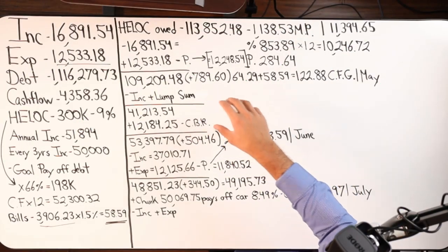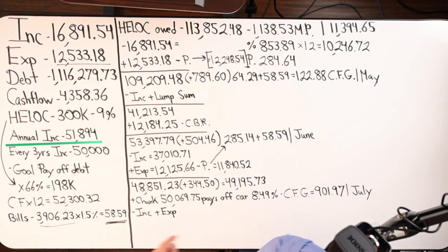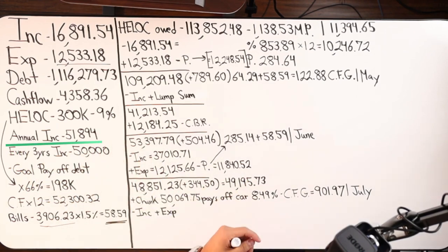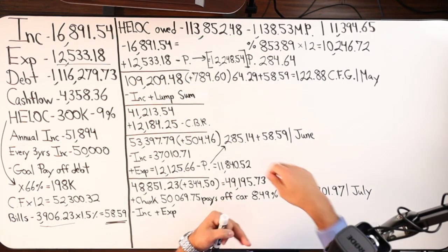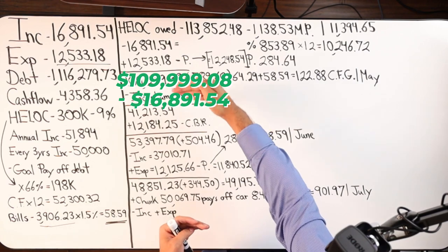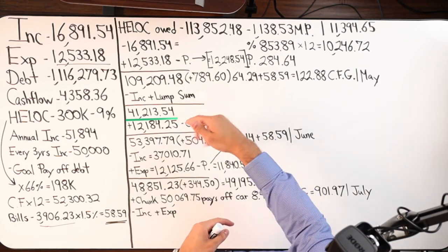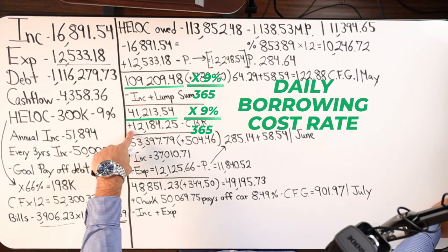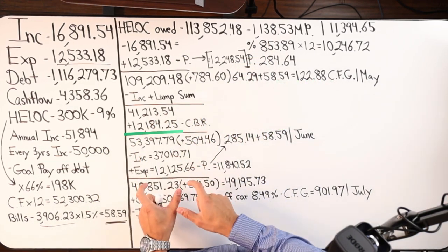So I did $109,209.48, and then add this number. Once you add that number up, then minus income, then minus lump sum, you should get this number, $41,213.54. Again, take that number times it by 9%. Take this number times it by 9%, divide by 365, you can get your daily costs. Now here's how I wrote the expense number to accommodate. So I see how I'm slowly adding the elements here, slowly adding it. So I'm saying $12,184.25 minus cashback rewards. So what I did was I minused $284.64 from this number. You should get that number. Then I minused $64.29 from that number, $12,248.54. You get this, $12,184.25. Then I'm saying minus, again, $58.59. Once you get that number, add that to the 41, you should be here, $53,397.79.